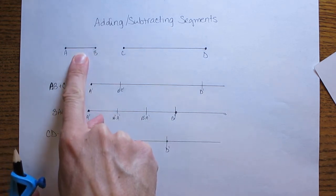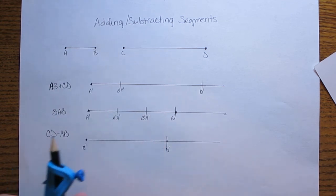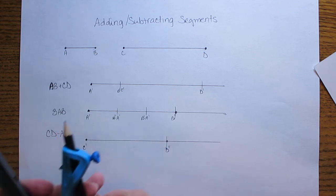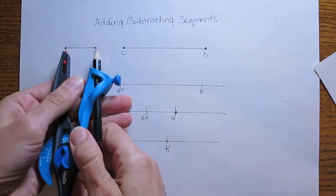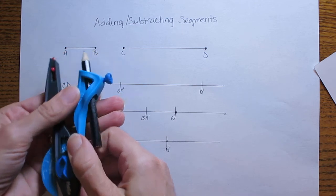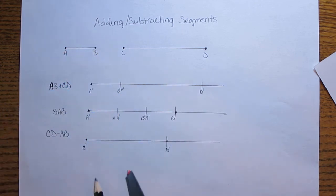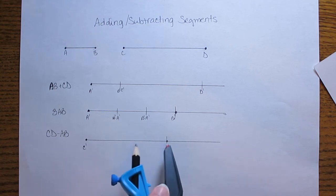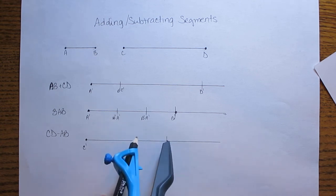Now I'm going to take AB and I'm going to subtract that by copying it on the inside of segment C prime D prime. So I adjust my compass back to the width of AB. Now to do this I'm going to put the pointed part of my compass on point D prime and I'm going to work backwards into this segment. So put the pointed end here and make a mark.